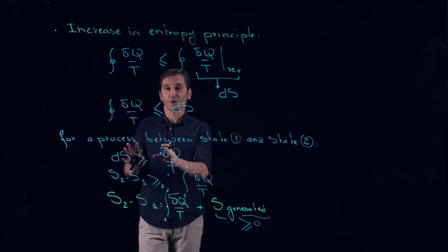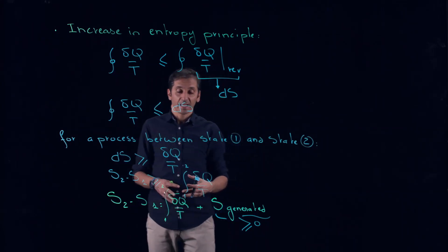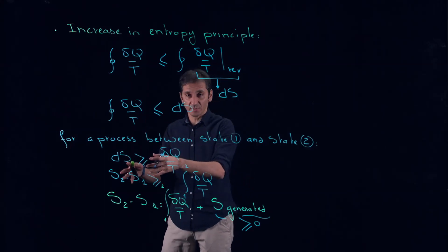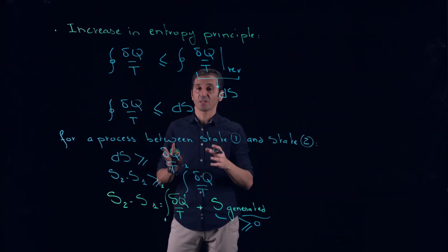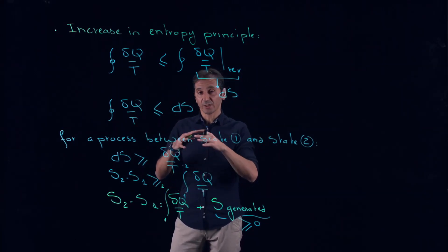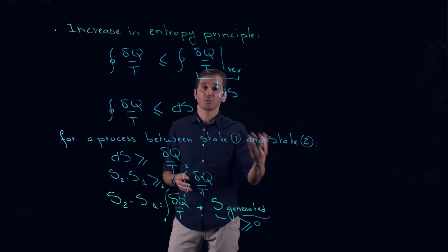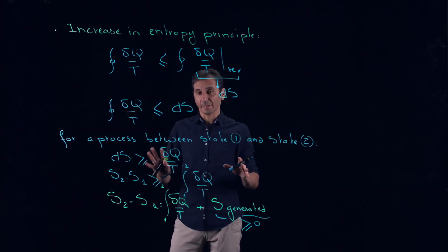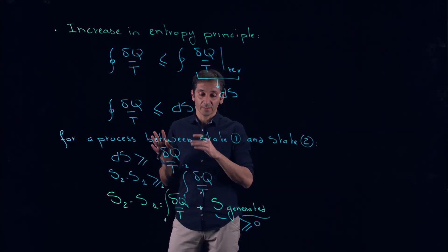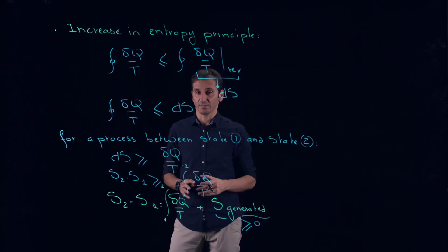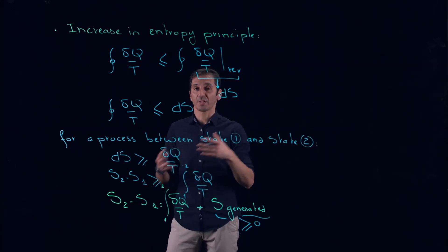So during this process, we have to generate entropy. The way we see this is that for a process to happen, S_generated — which represents the entropy of the universe — has to be positive or equal to zero. You cannot have a process where heat is involved and claim that entropy decreases. When we solve simple examples, you will see how we can calculate this term, and it will tell us whether a process is possible or impossible.